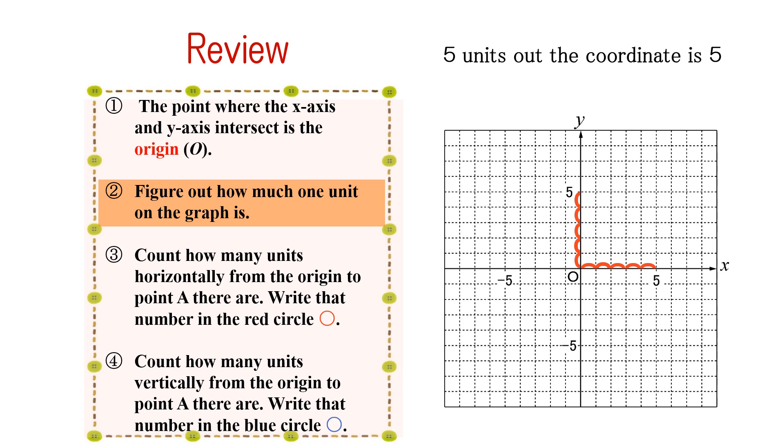Next, we see how much one unit on the graph is. In this case, from where the number 5 is marked on the graph, we can see that each unit on the graph is 1.